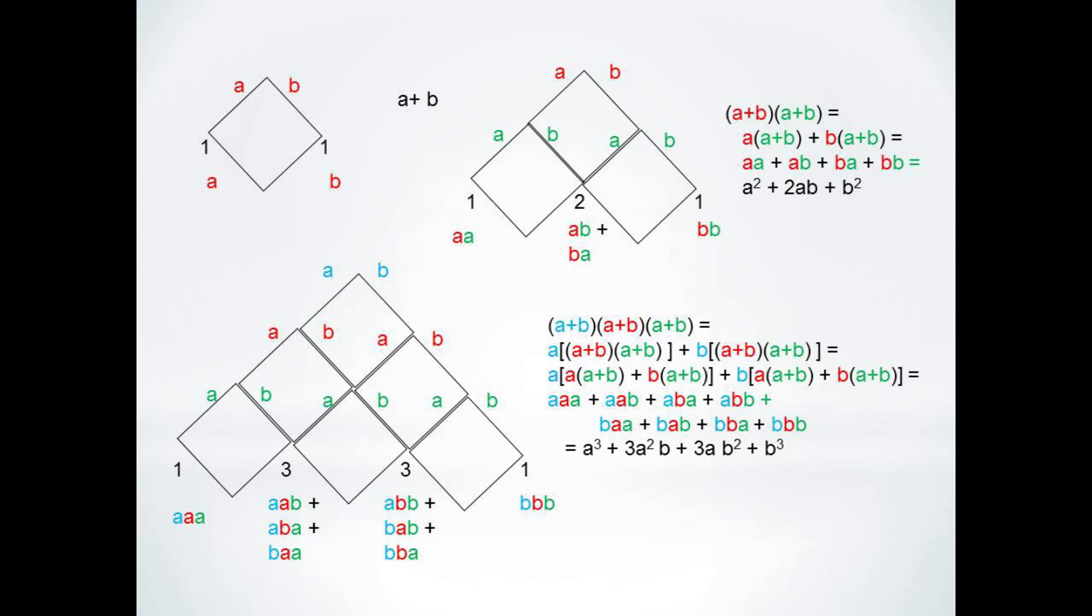Alternatively, if you think of asking how many ways could we have b in each term, notice this works out to 3 choose 0, 3 choose 1, 3 choose 2, and 3 choose 3, again giving us 1, 3, 3, 1.